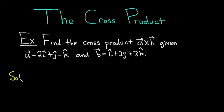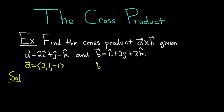Work through it very carefully. One thing I like to do in these problems is to first write the vectors in component form. So vector A equals the components 2, 1, negative 1 — there's really a 1 in front of the j-hat and a negative 1 in front of the k-hat. And vector B equals 1, 2, 3.